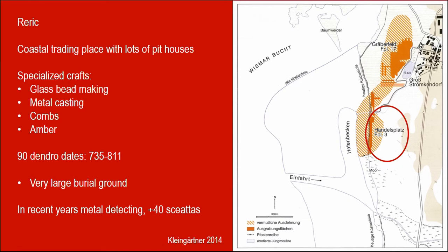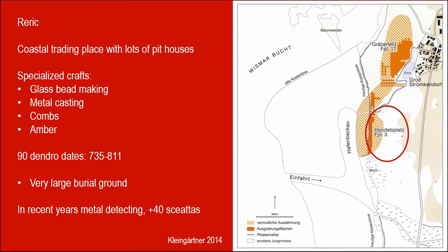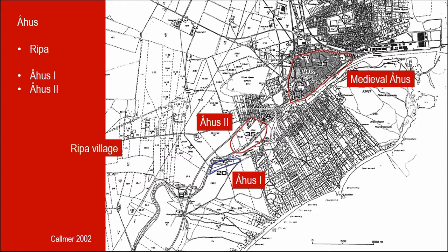That entry also says that before 808 Ribe had given lots of income to the Danish king, thereby suggesting Danish control over the emporium in the 8th century. Only very small parts of early 8th century Ohus have been excavated, but the activities seem to fit those of Ribe, and also from Ohus there are three Wodan-monster sceattas. The neighboring village actually has the name Ribe and has had that name since medieval times — it is a very unusual place name also in Sweden — and I think this probably indicates that Ribe was one of the names of the emporium.